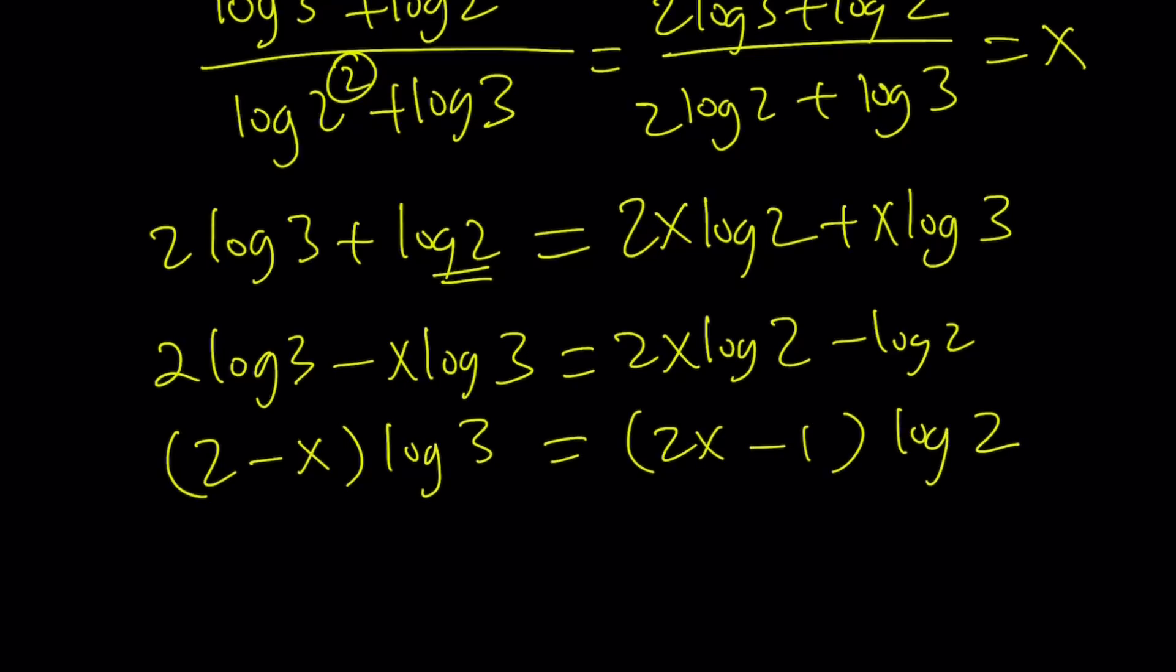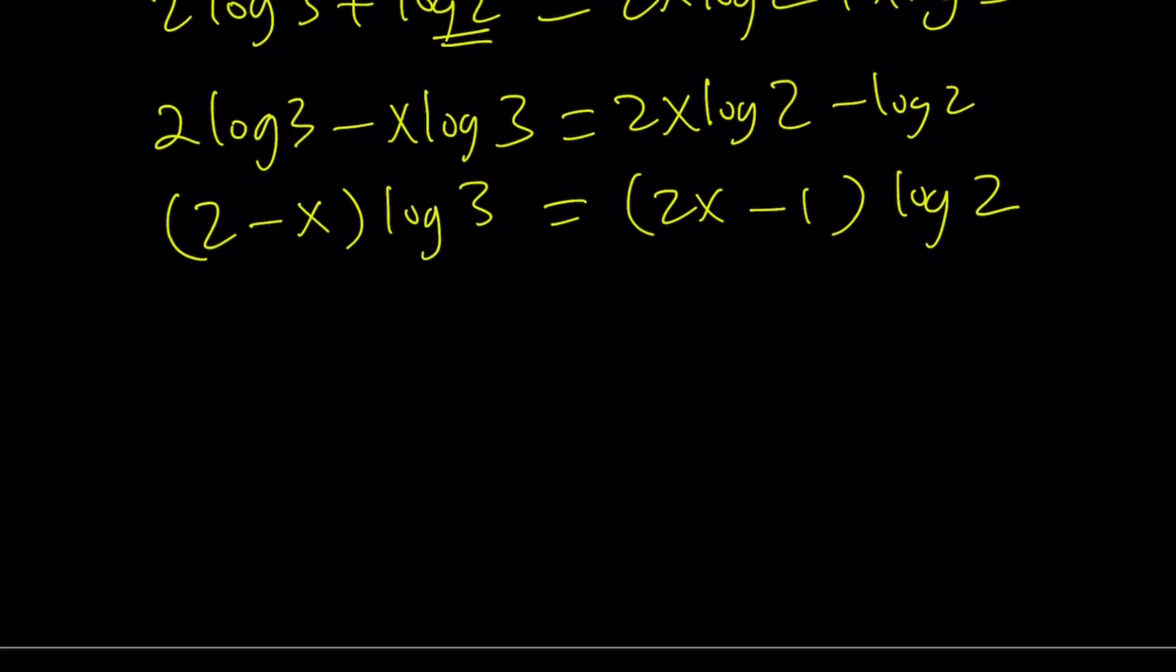So you're going to get 2 minus x times log 3 equals 2x minus 1 times log 2. I hope this makes sense now because we had this type of quotient, right?